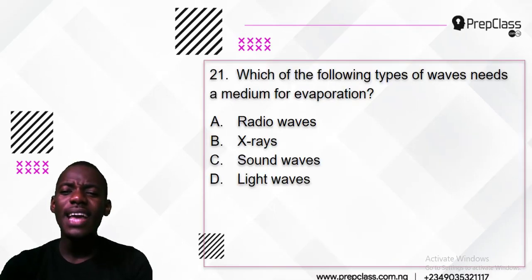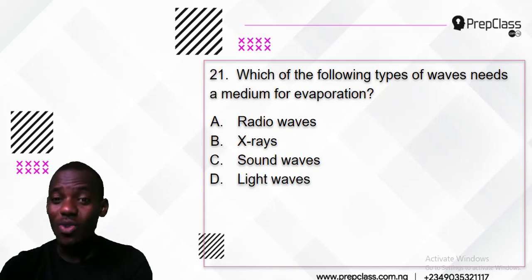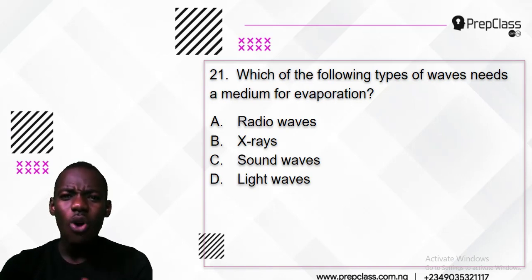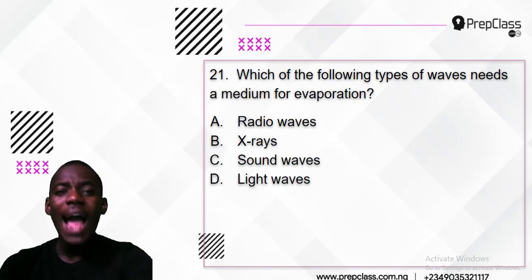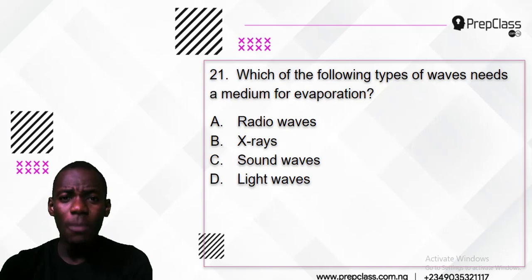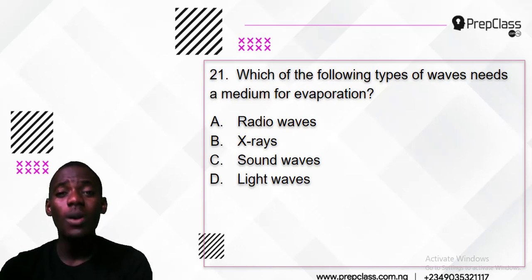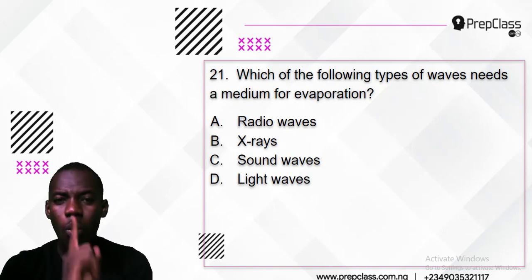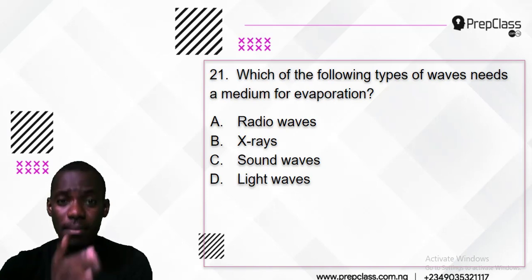Usually the following type of wave needs a medium for propagation. Do you have any idea — is it radio wave, x-ray, sound wave, or light wave? Now the wave that needs a medium is called a mechanical wave, while the wave that does not need a medium is called an electromagnetic wave. Now which one is mechanical? All others are electromagnetic except one, because only a mechanical wave needs a medium.